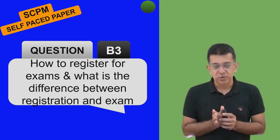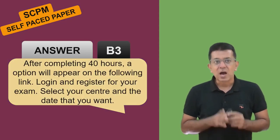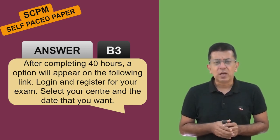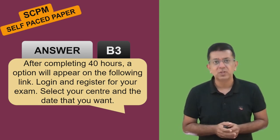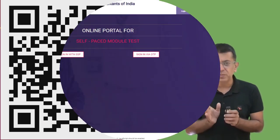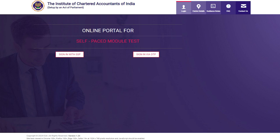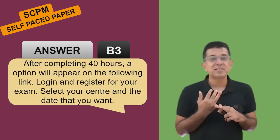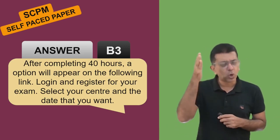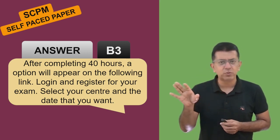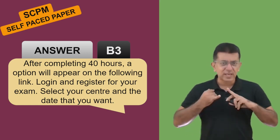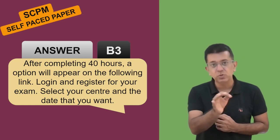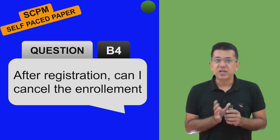How to register for exams and what is the difference between registration date and examination date? After completing 40 hours, an option will come to give the exams. Once you are prepared and your 40 hours are over, visit the registration link. You can select the center you want, select the date of the examination, and also the time. Try to register, but registration will only be possible if 40 hours are completed, else you will not be able to register.